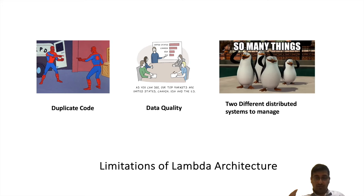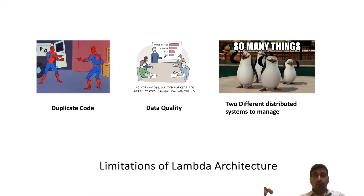Since you are maintaining two systems — one batch system and one streaming system — it is a big headache to maintain upgrades and manage the infrastructure of two completely different systems. For example, if your streaming system is built on Flink and your batch system is built on Spark, you end up maintaining two different systems, and the skill and investment required will be huge.